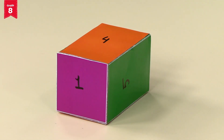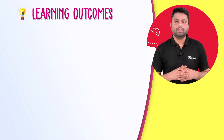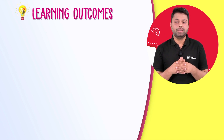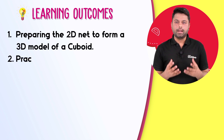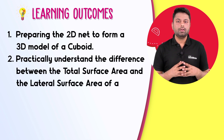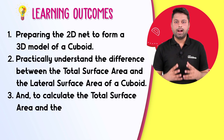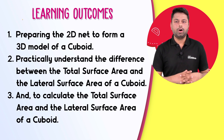In a similar manner, you can perform the activity to practically understand the basic difference between the total surface area and the lateral surface area of cuboids with different combinations of square and rectangular faces. Hope you have enjoyed it. After performing this activity, you will have gained expertise in: preparing a two-dimensional net to form a three-dimensional model of a cuboid; understanding the difference between total surface area and lateral surface area; and calculating both for a cuboid. Visualize maths with Allen IntelliBrain and fall in love with learning. Thank you.